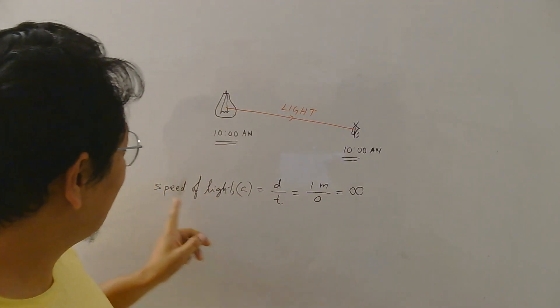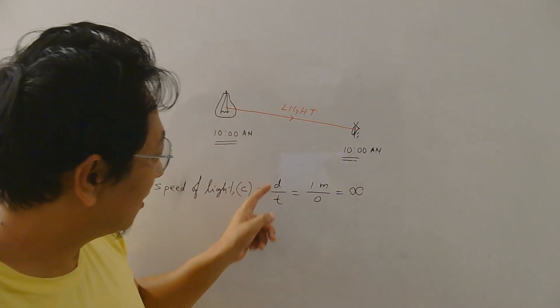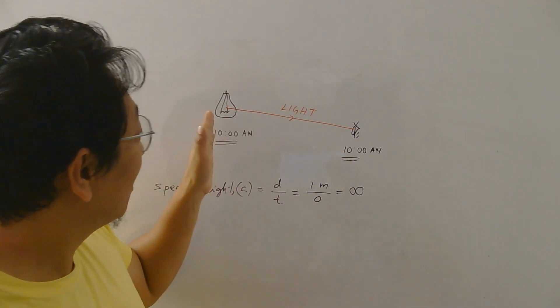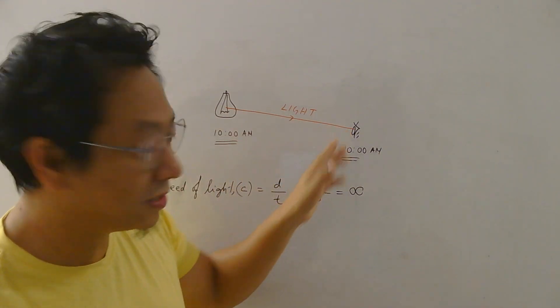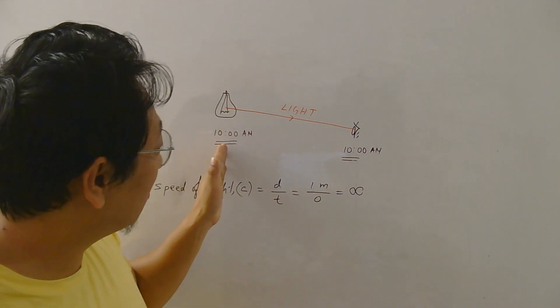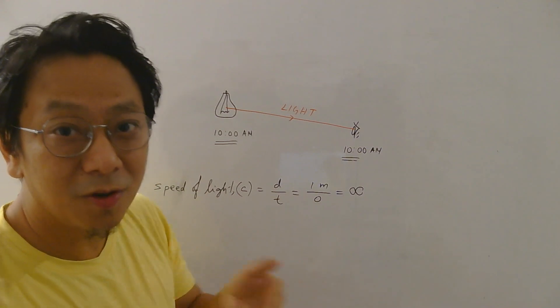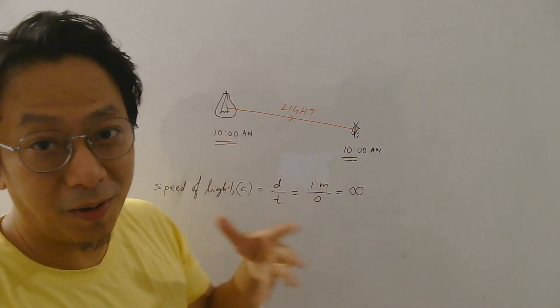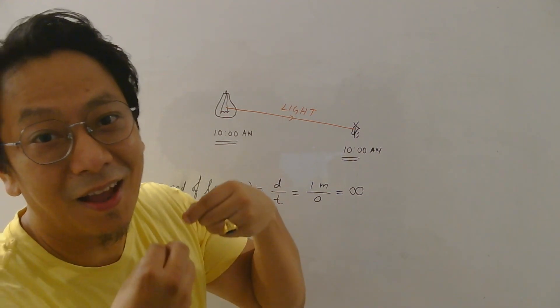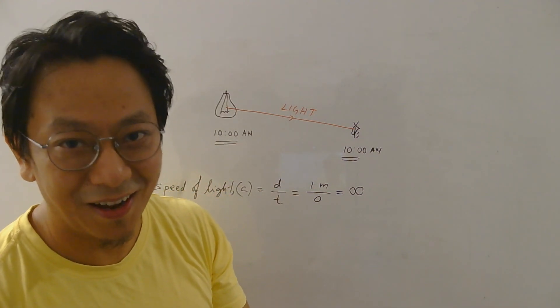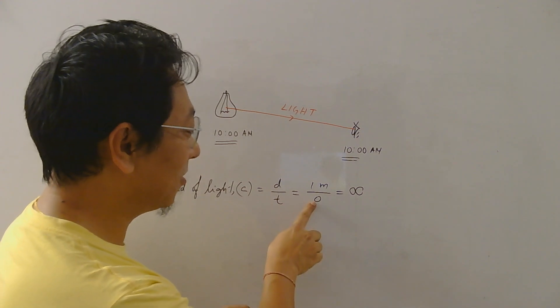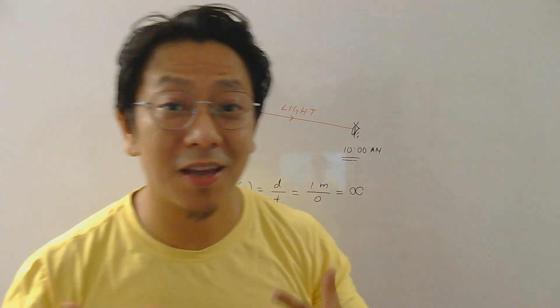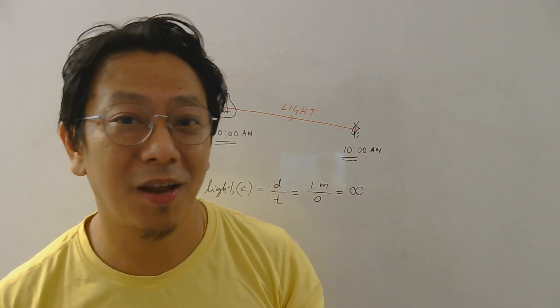Now what that means is the speed of light, which is distance covered by time taken given by the symbol C, must be infinite because it has to cover some distance, let's say 1 meter, but the time taken from the bulb to your eyes is zero because light seems to reach instantly. You switch on the bulb at 10 o'clock and the light reaches your eyes at 10 o'clock, and therefore the time taken is zero, and something divided by zero is infinite.